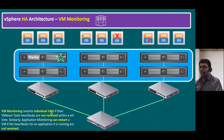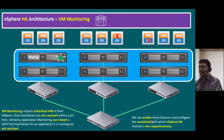VM monitoring restarts individual virtual machines if their VMware Tools heartbeats are not received within a set time. Similarly, application monitoring can restart your VM if the heartbeats for your application are not received within a set time. These two scenarios are what trigger an automatic reboot. We can enable these features and configure the sensitivity with which vSphere HA monitors non-responsiveness. Some organizations may prefer to enable VM monitoring for all testing, development, and production environments. Whether to enable or disable vSphere HA VM monitoring is subject to customer choice, particularly for time-sensitive applications — we follow as per the customer's regulations.